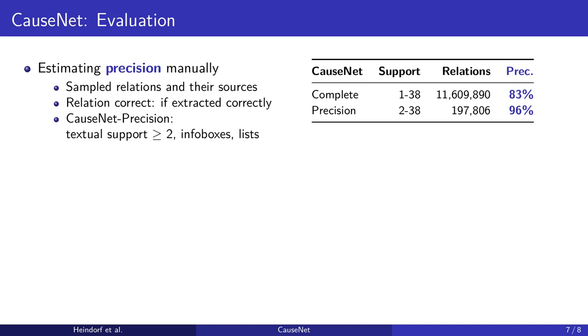In this way, our whole causality graph with about 11.6 million relations achieves a precision of about 83%.